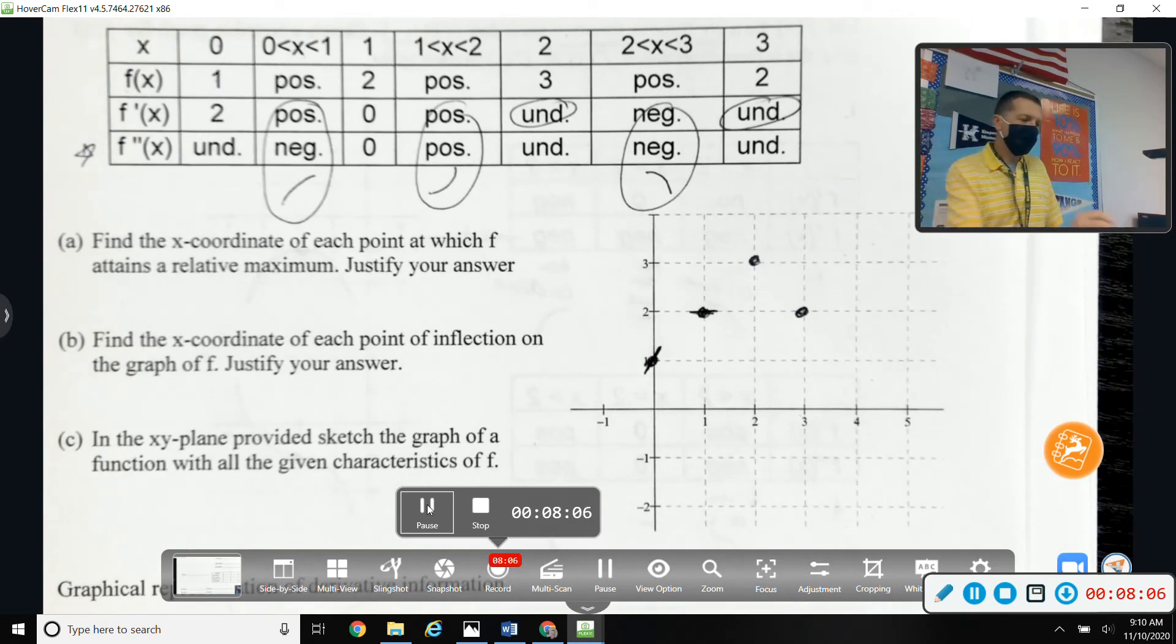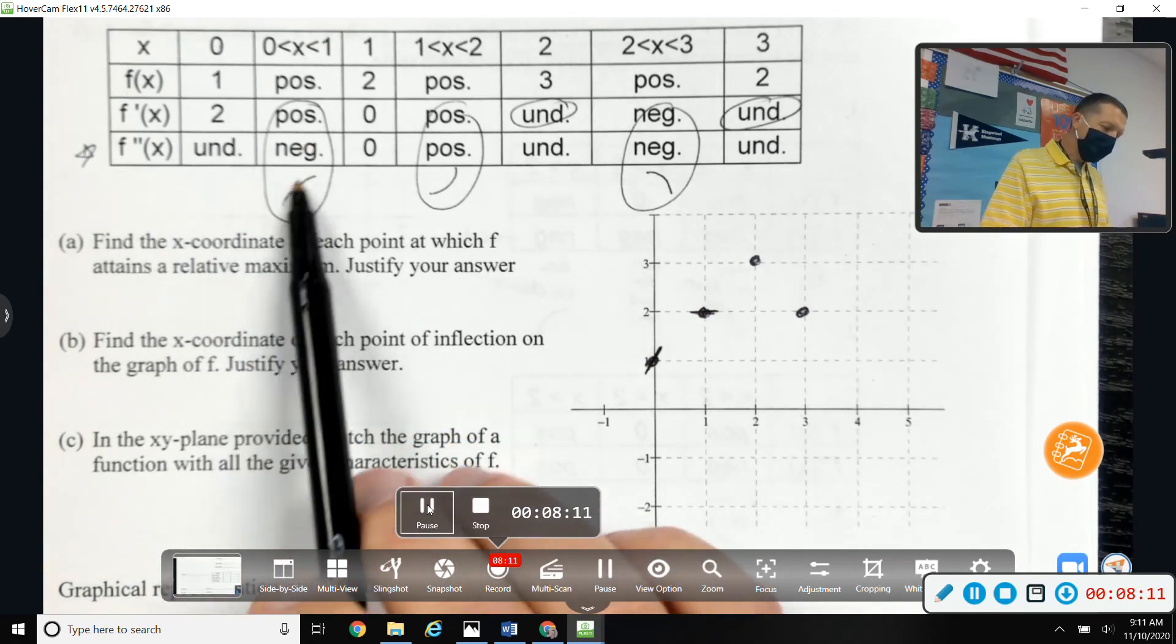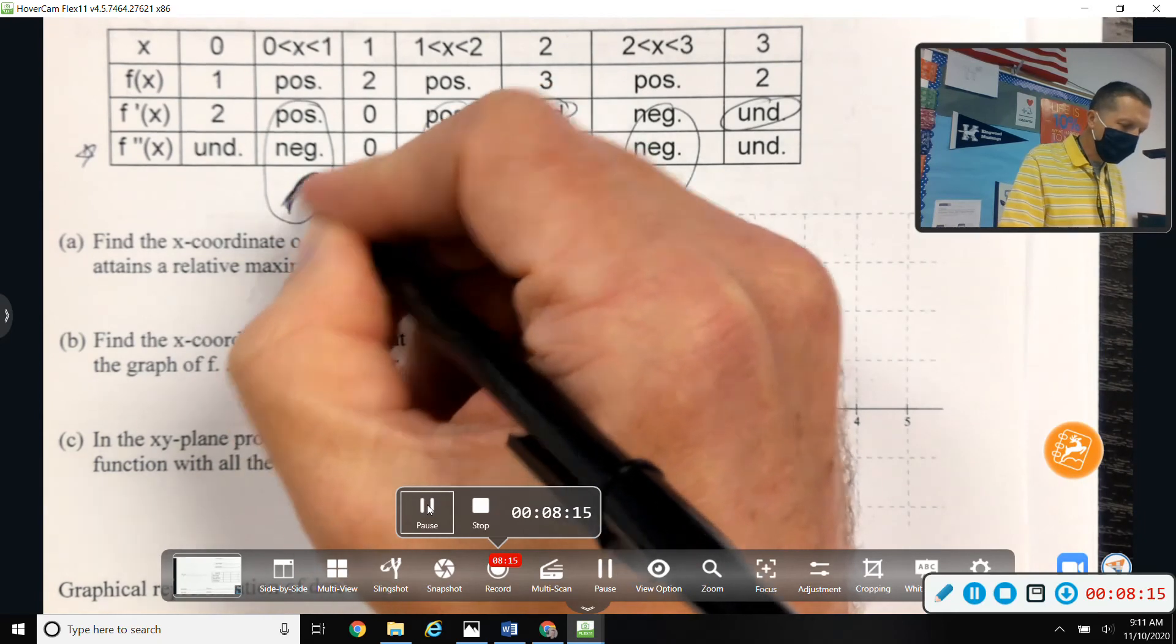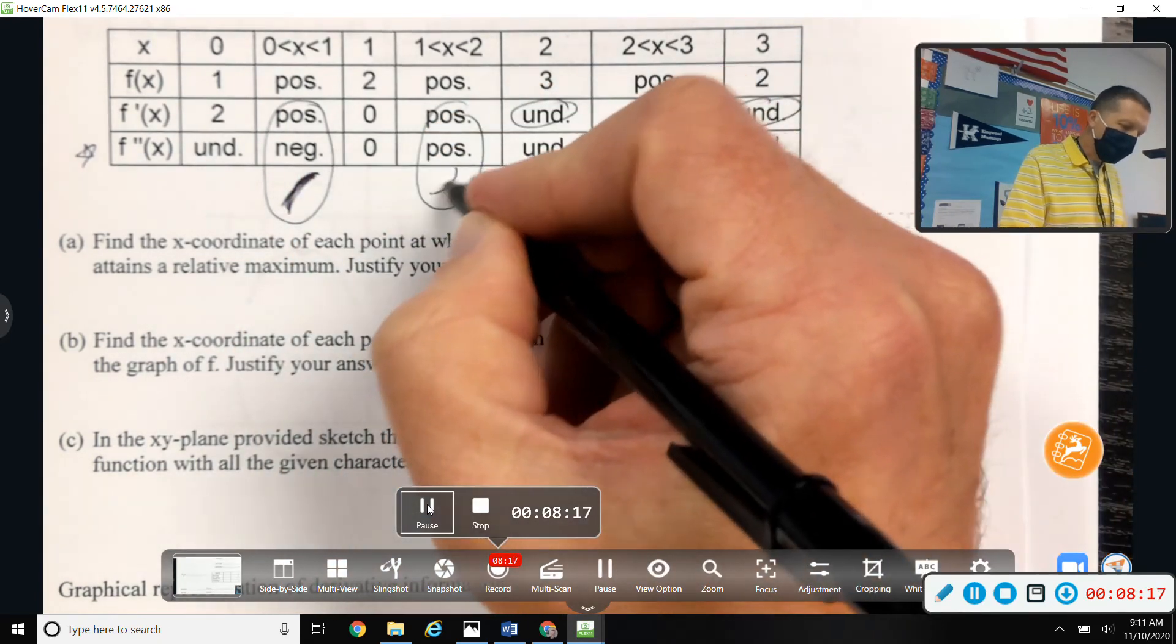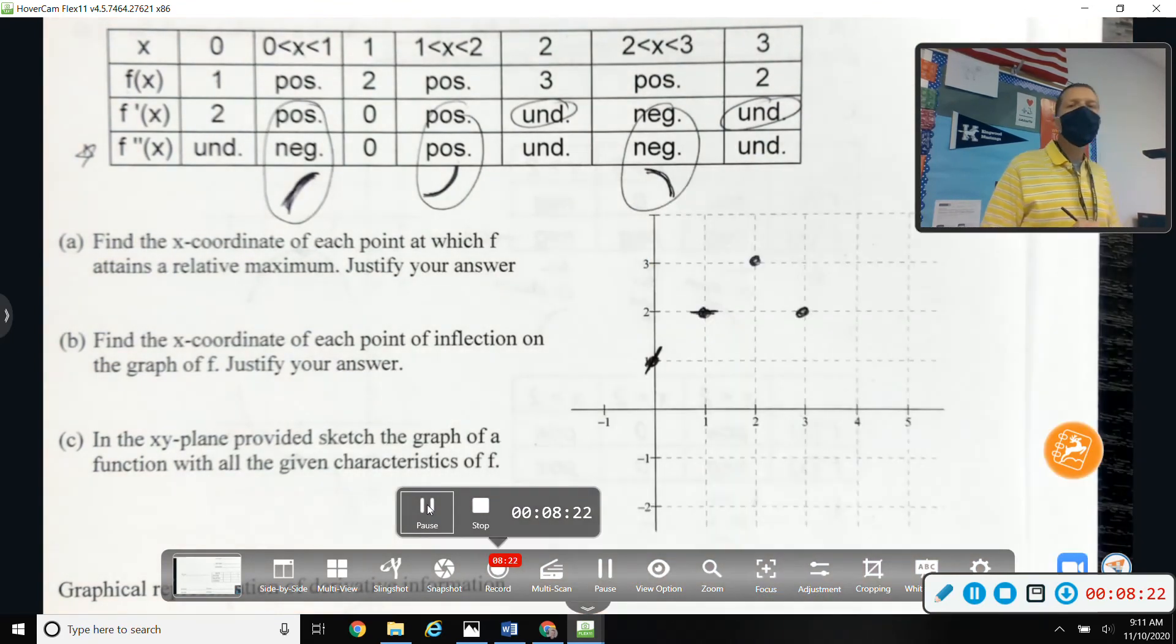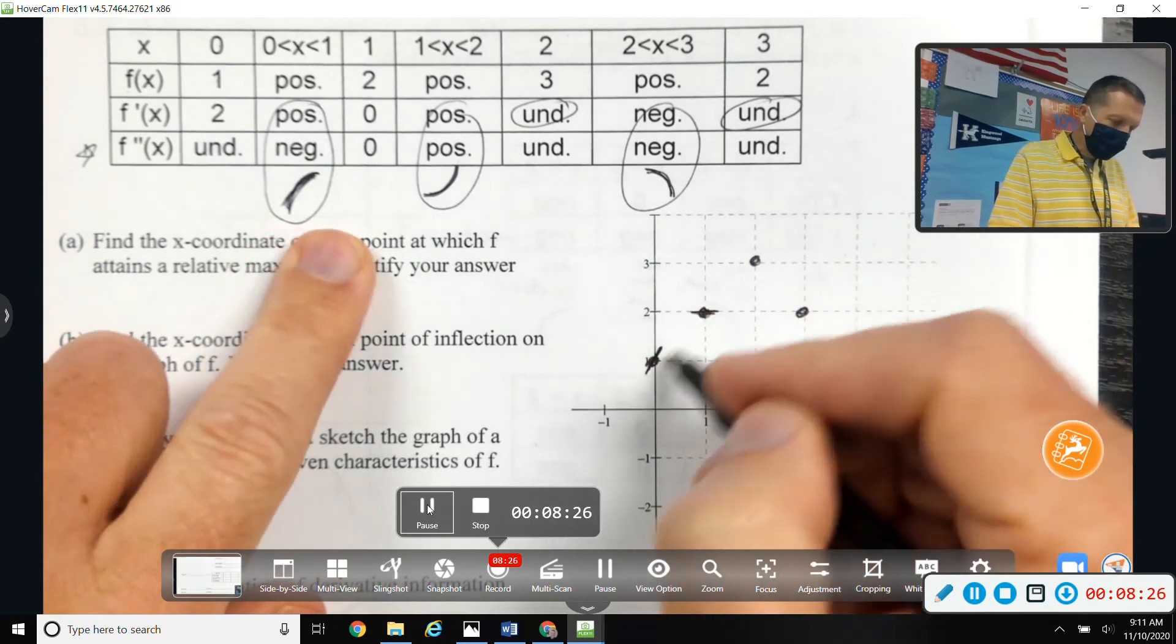Again, with the f prime positive means we're increasing, double prime negative means we're concave down. Increasing but concave down. Increasing concave up. Decreasing concave down. So now let's fit those pieces onto the things that we already know.